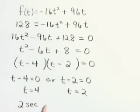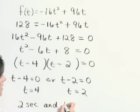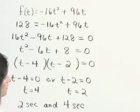the ball is traveling upward and it goes through that height of 128 feet. Then it begins to fall and falls through that height of 128 feet at 4 seconds. So our answer: 2 seconds and 4 seconds.